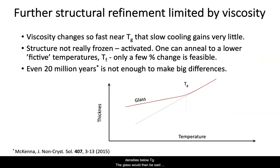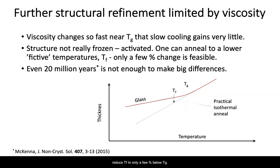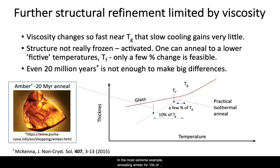One can cool slower or anneal to get to those higher densities below Tg. The glass would then be said to have a fictive temperature, Tf, which is lower than Tg. But since the restructuring rate is limited by viscosity, feasible experiments can reduce Tf to only a few percent below Tg. In the most extreme example, annealing amber for tens of millions of years reduces Tf by about 10 percent.